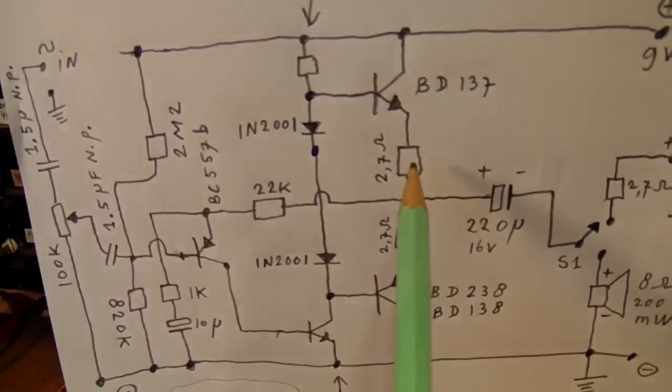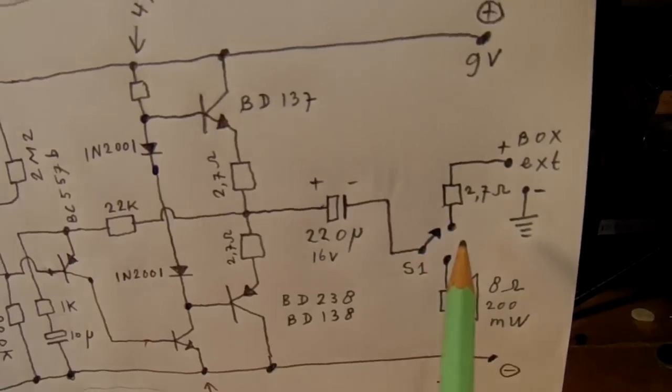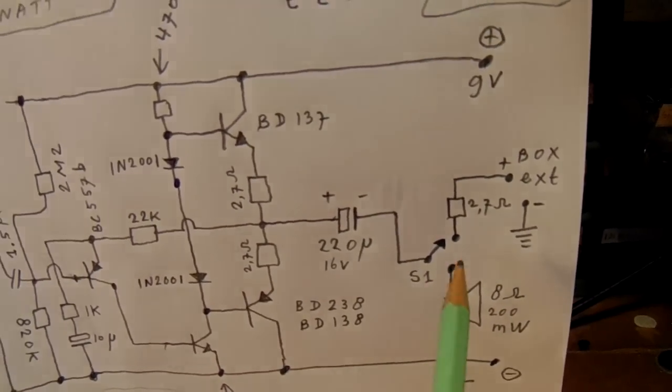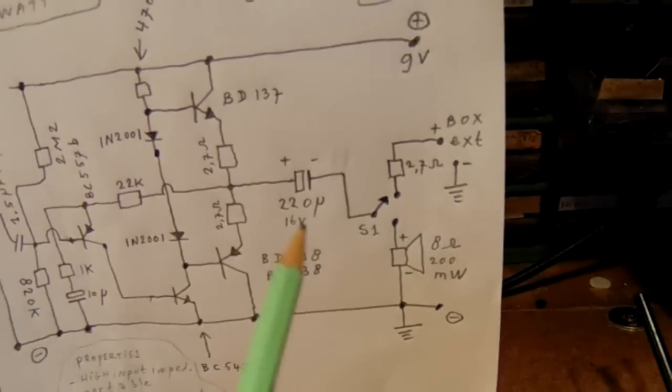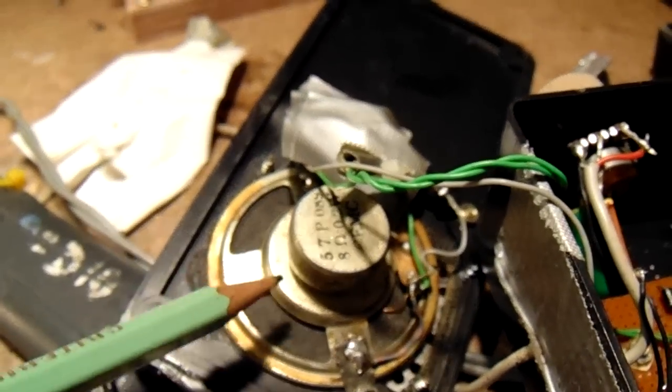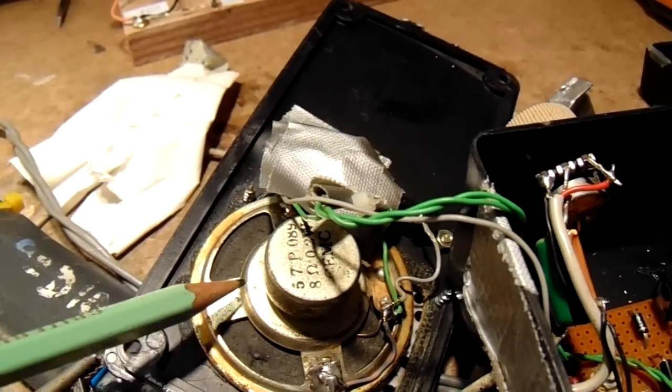Here a 2.7 ohms resistor, here also, and here also. And with this switch you can switch between an external box and the internal speaker. And here you see the internal speaker.